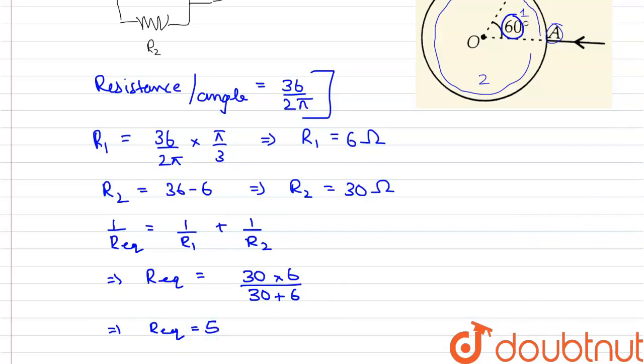Therefore, we can say that on calculation, the value of effective resistance which is R equivalent is equal to 5 ohms.